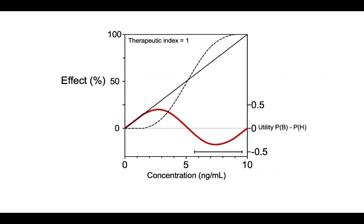The upshot on this topic is that I show you again one drug with two effects — analgesia and respiratory depression — and a therapeutic index of one. That does not mean much, because the utility is negative over the clinical dose range. So I believe that the utility has way more information than the therapeutic index.